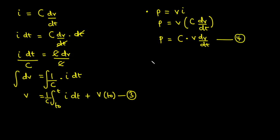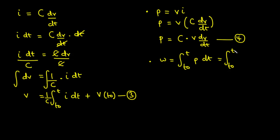We now derive the energy stored in a capacitor. The energy w is the integral from t₀ to t of instantaneous power dt. Substituting equation four for p, we get the integral from t₀ to t of C·v·(dV/dt)·dt. The dt terms cancel, leaving us with an integral with respect to v.